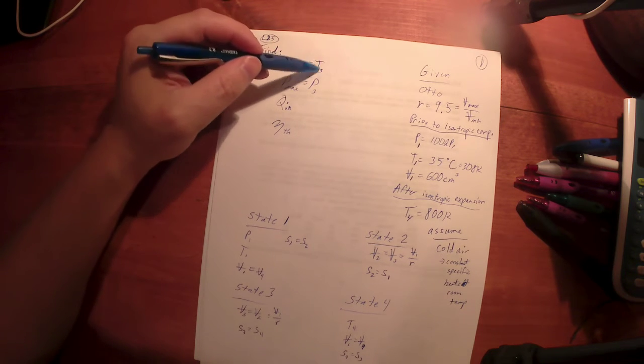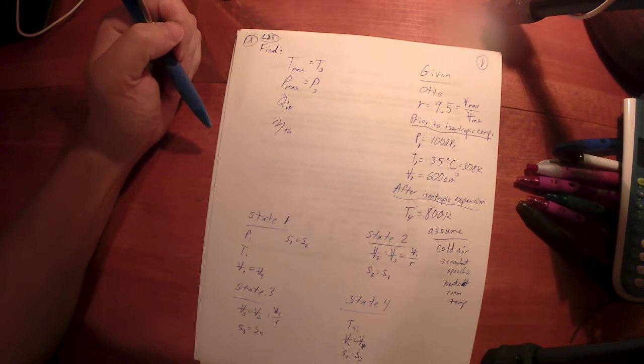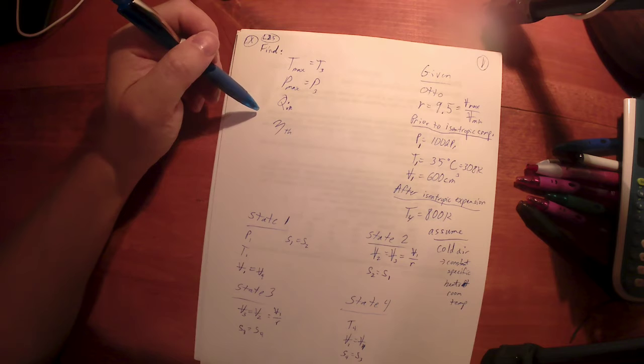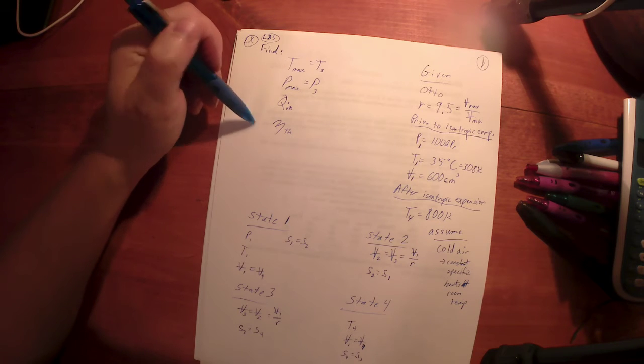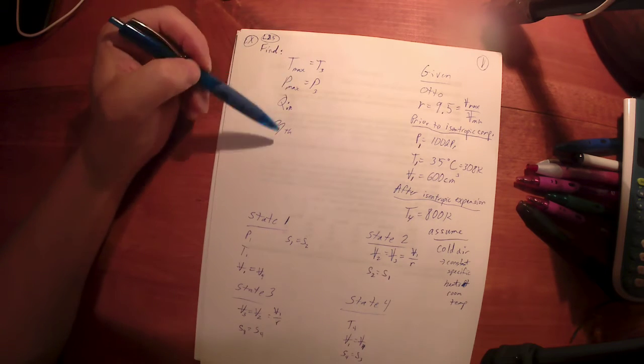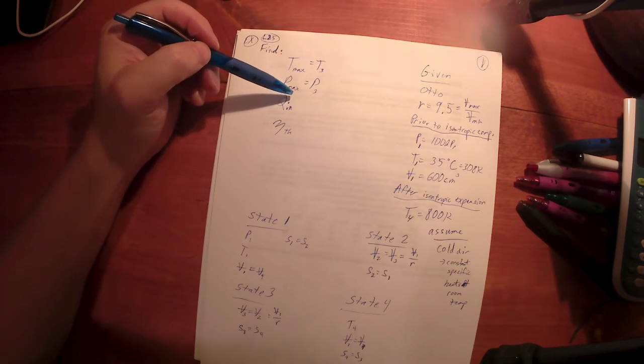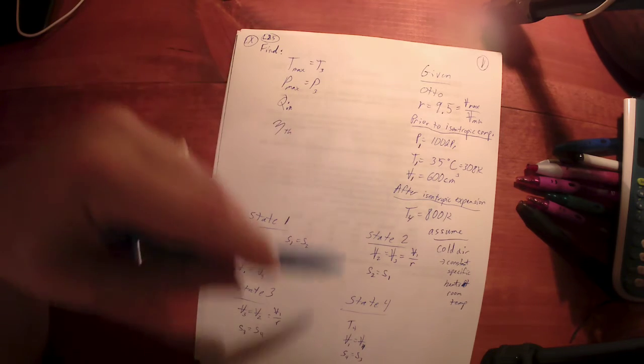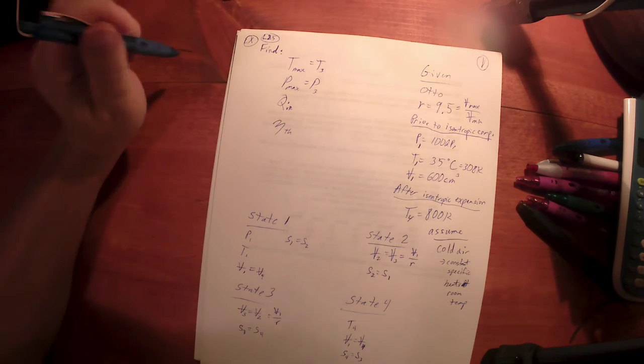Notice if this problem only asks for maybe the heat and efficiency, now you wouldn't have to find P3. If that's the case, we still need to find T3 and T2. What if I already gave you the heat and I ask you for the net work out given the efficiency and find the temperature? I could be very picky about it. I could not ask you for four different things, just ask you for a couple of things.